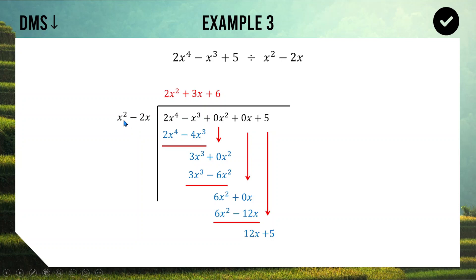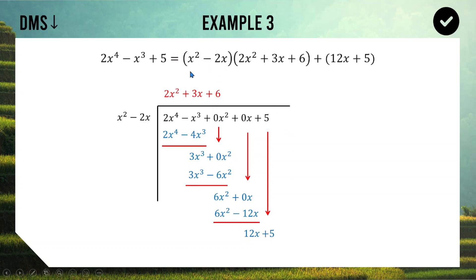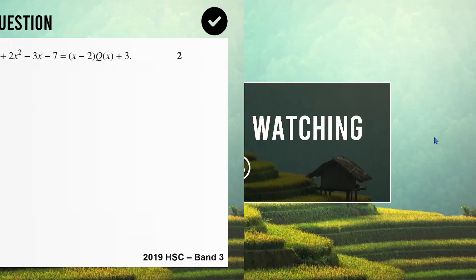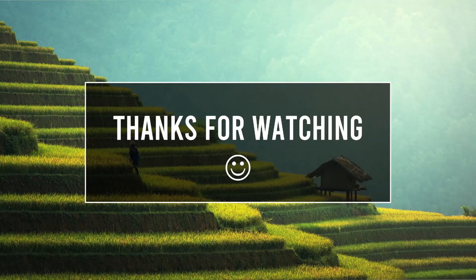Tragically we can't do 12x divided by x², because x² is a higher degree than x. So as soon as what you're working with is a lower degree than your divisor, you stop — and that 12x + 5 is our remainder. When dividing by an x², your remainder can have an x in it. We can rewrite the polynomial as (x² − 2x)(2x² + 3x + 6) + (12x + 5). So there's how you do long division with polynomials. For practice, here's a question from the 2019 HSC — a band 3, two-mark question. See if you can use long division to find q(x), post your answers in the comments, and I'll catch you in the next polynomials video. Bye for now!